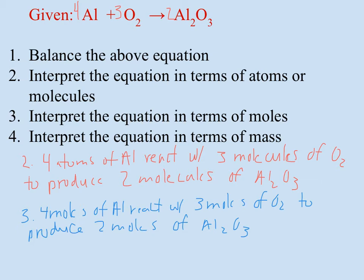What I'm trying to get you to think about is: when you look at a chemical equation, instead of just reading 4Al + 3O2 → 2Al2O3, you should actually be thinking in your head that this means four moles of aluminum reacts with three moles of oxygen and produces two moles of aluminum oxide. Be thinking about these ratio amounts.